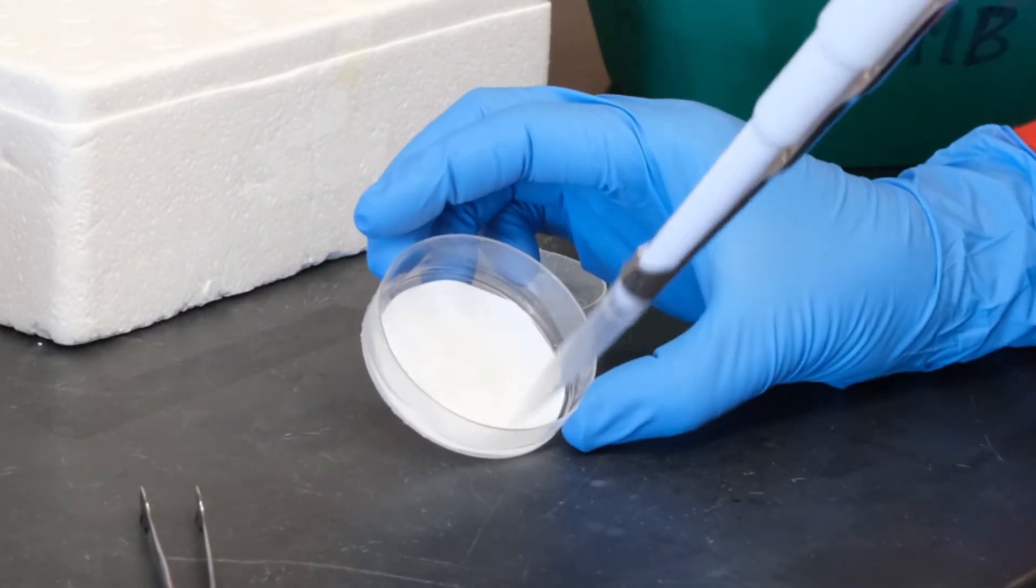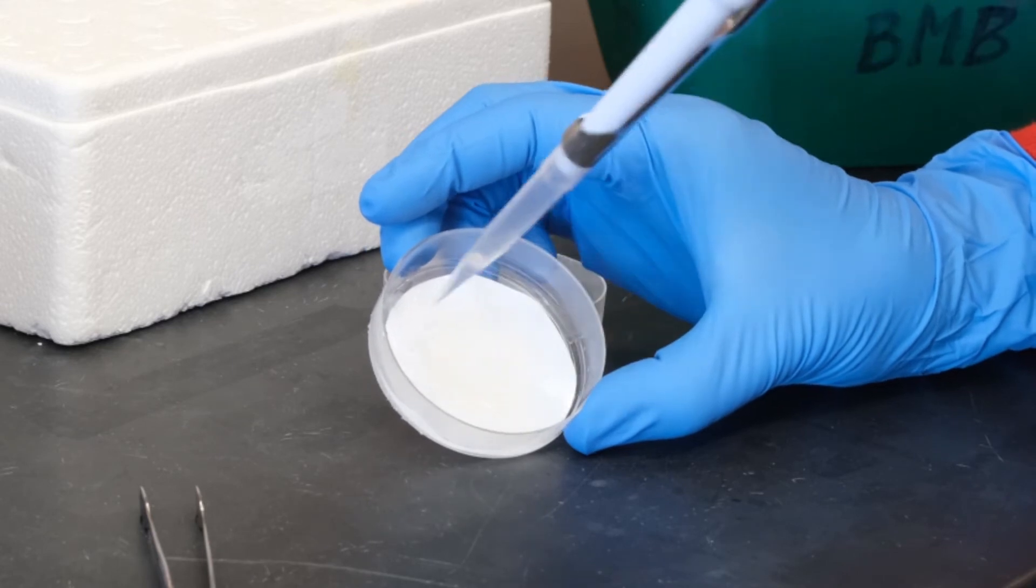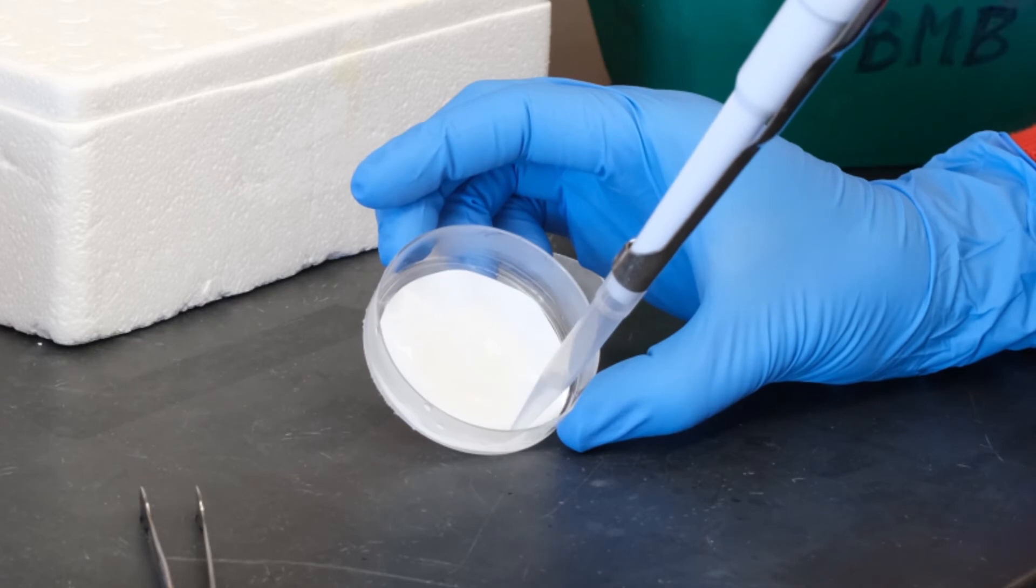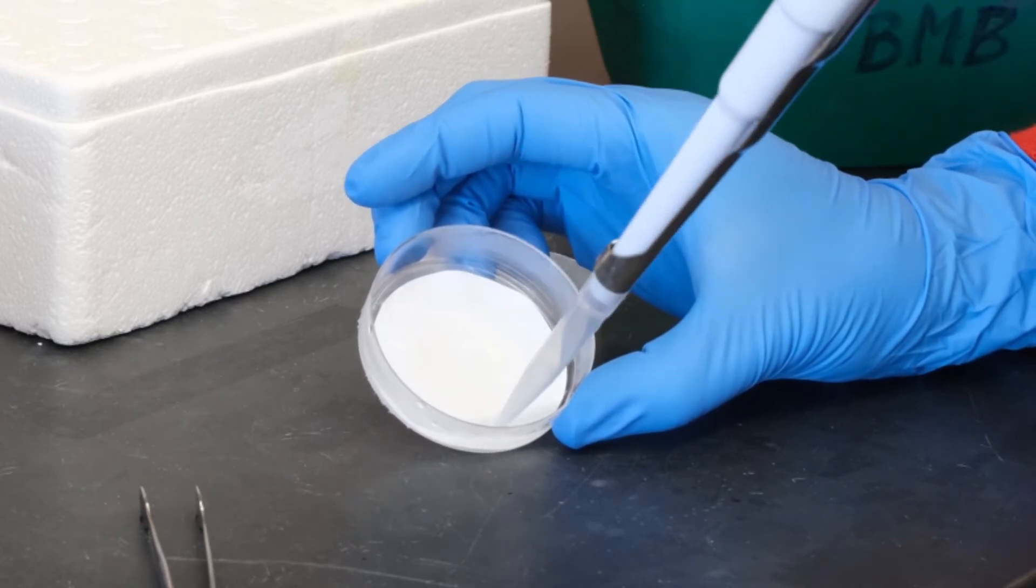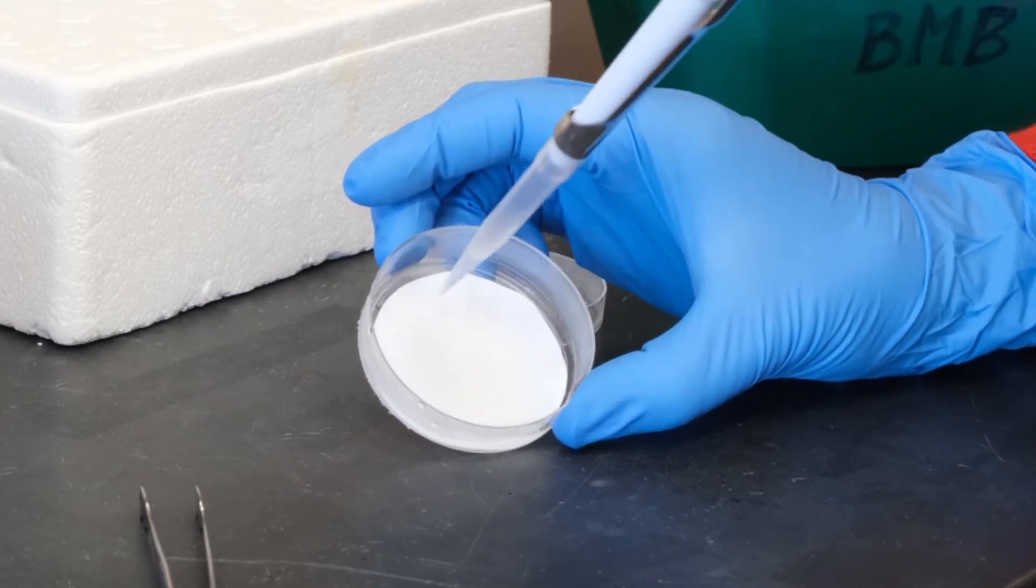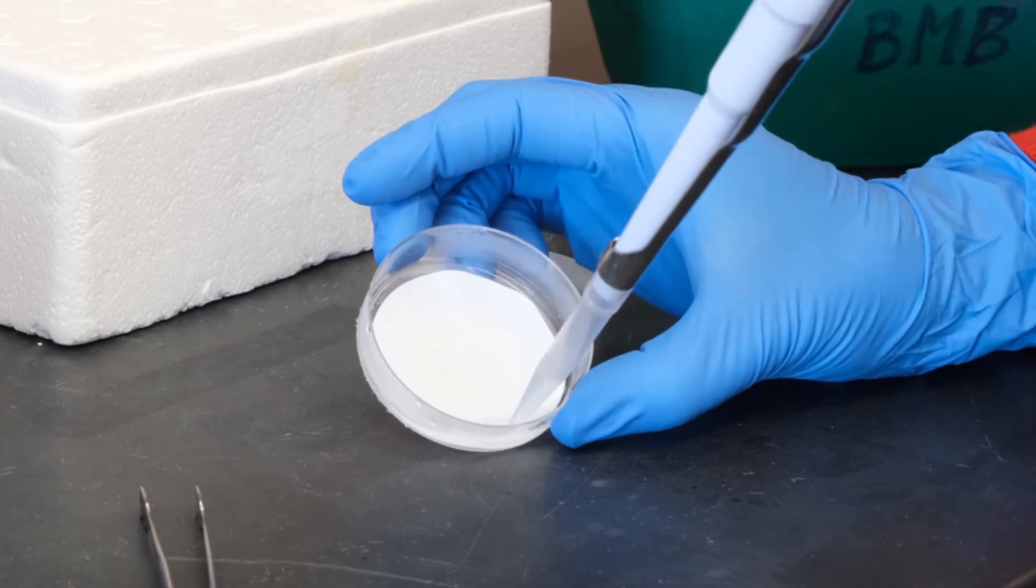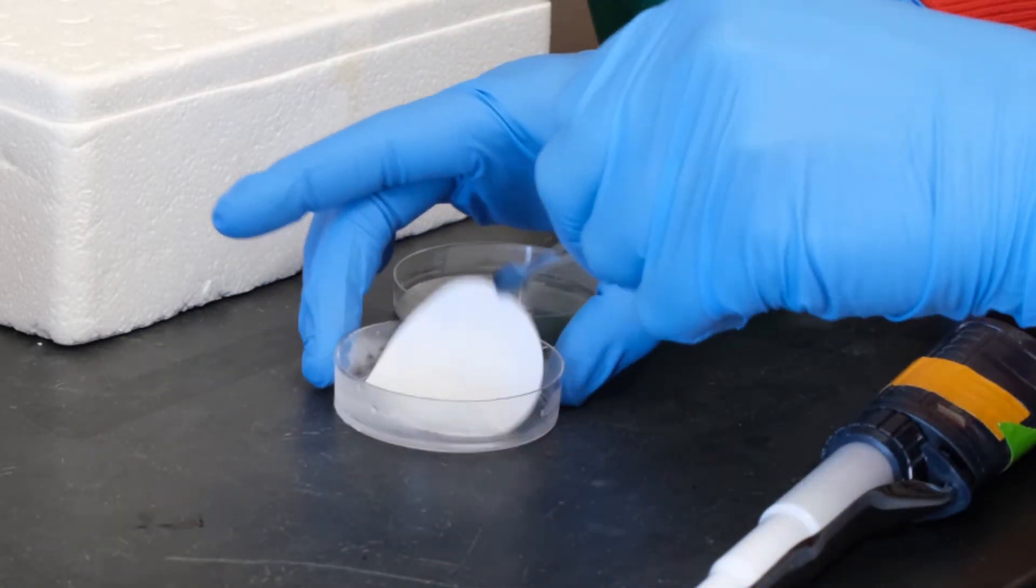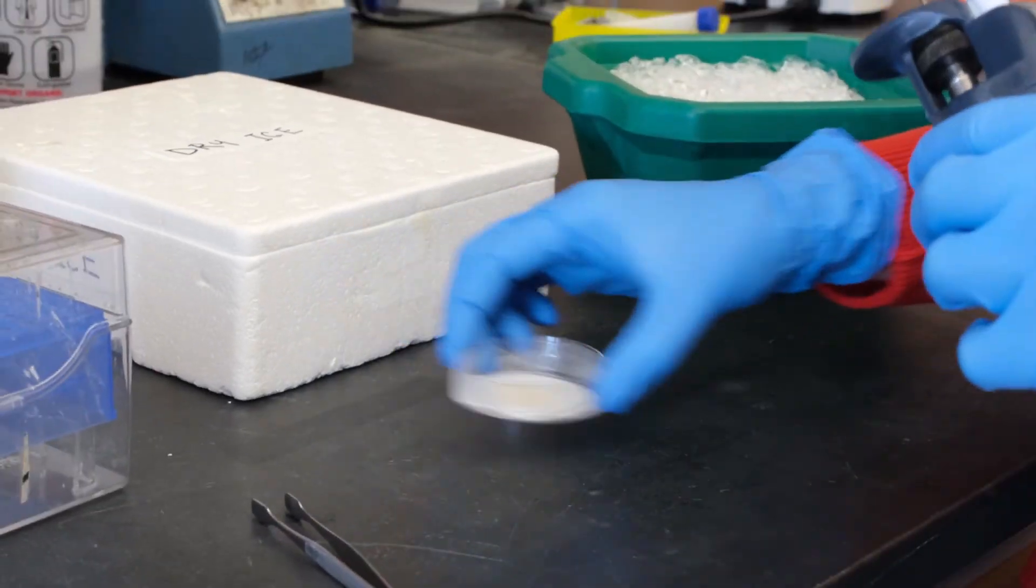Rinse the filter disk thoroughly by pipetting the solvent over the disk about five times. Flip the disk over with forceps and repeat this rinsing on the other side.